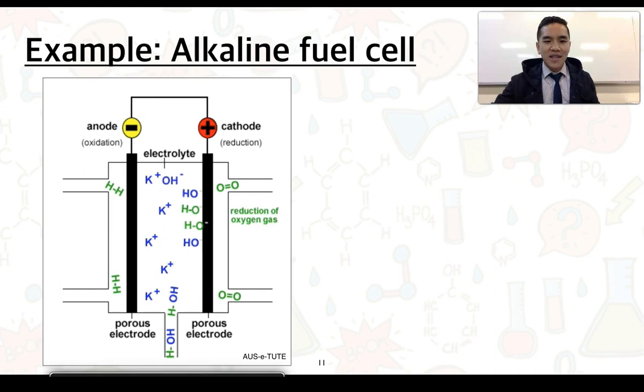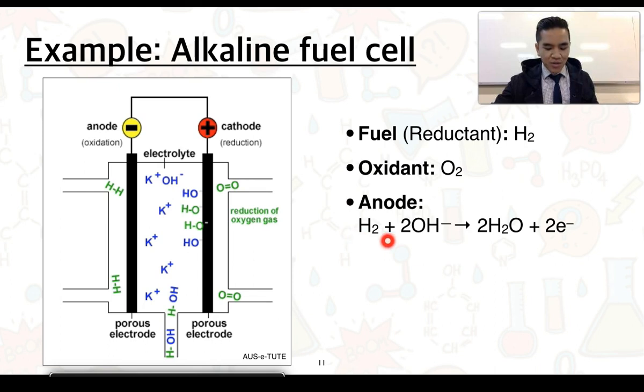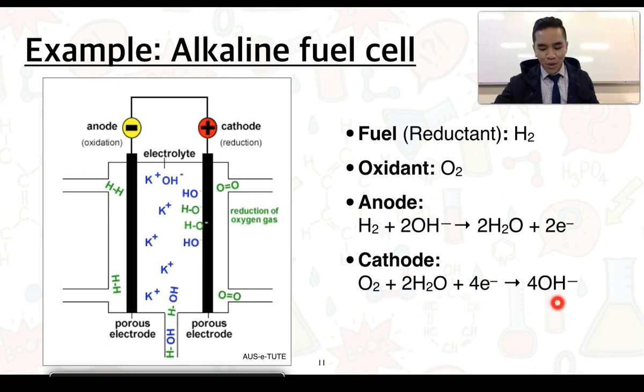If we summarize these half equations, again, we can see that the fuel or reductant is H2, oxidant is O2. At the anode in an alkaline fuel cell, hydrogen reacts with two lots of hydroxide to produce two lots of water and two electrons. At the cathode, we have oxygen reacting with water, gaining four electrons and forming four hydroxides. We can see in this case that the electrons lost and gain are equal. So we'd effectively need to double this half equation. And when we write the net equation, we should find that we get exactly the same net equation as the previous example.